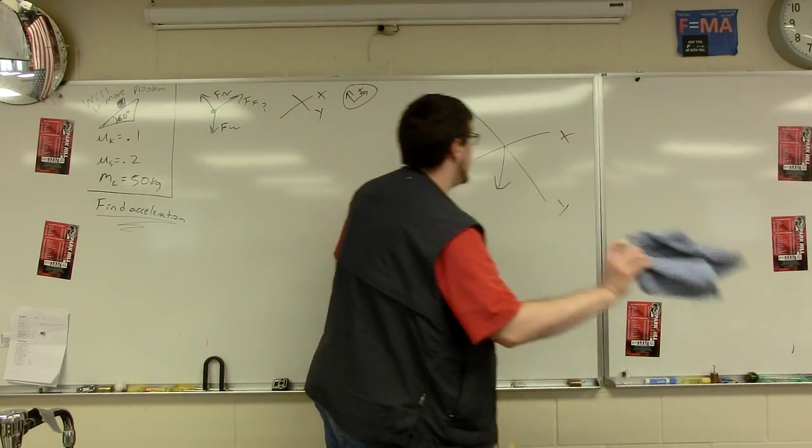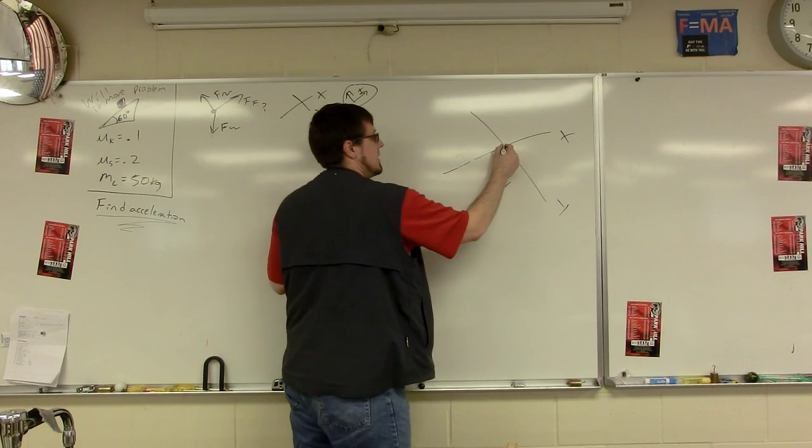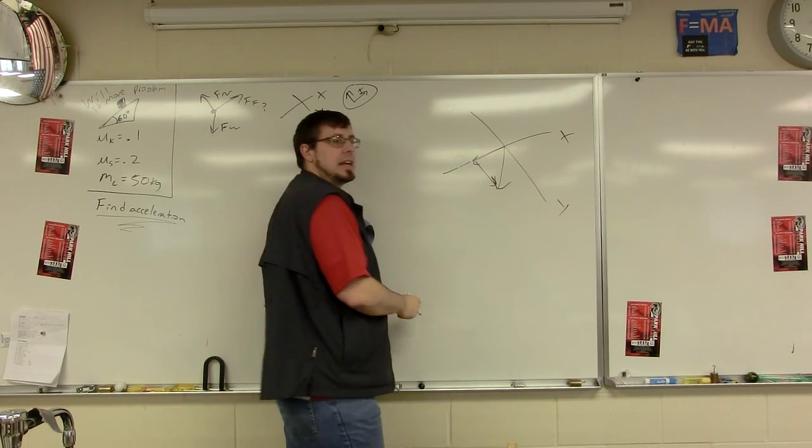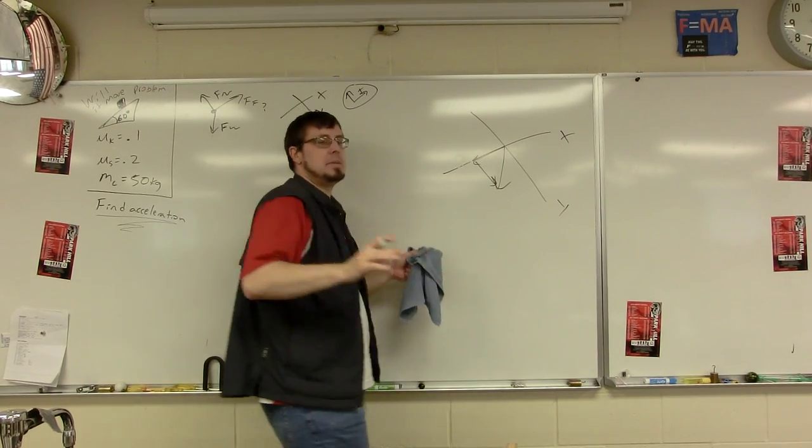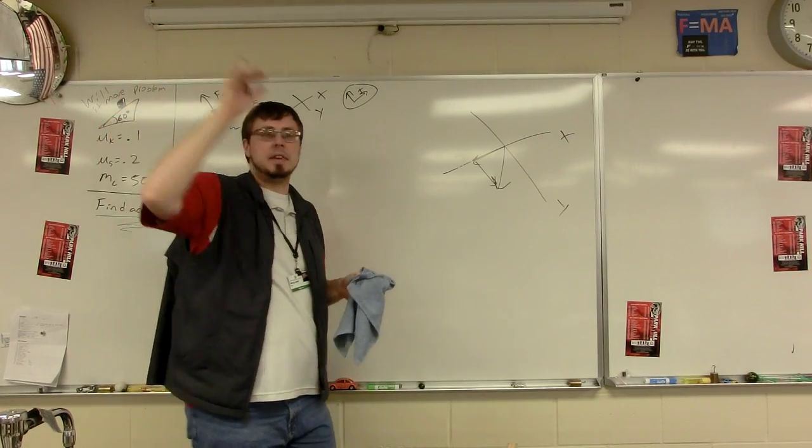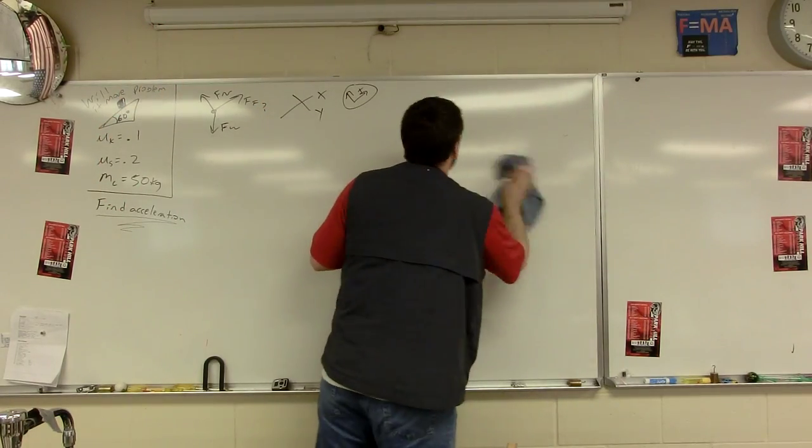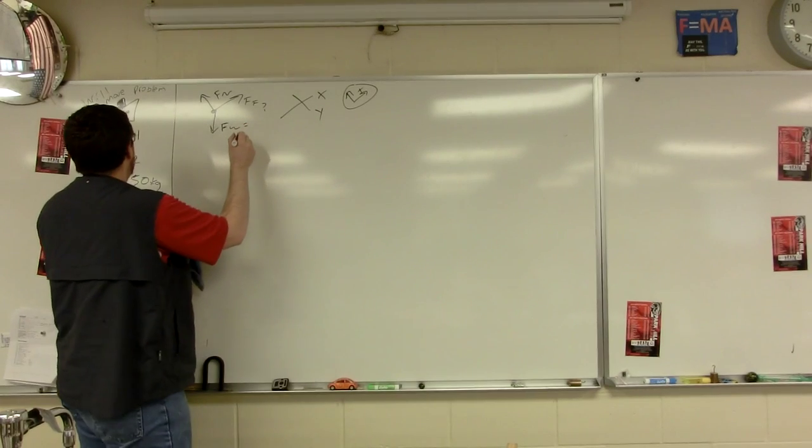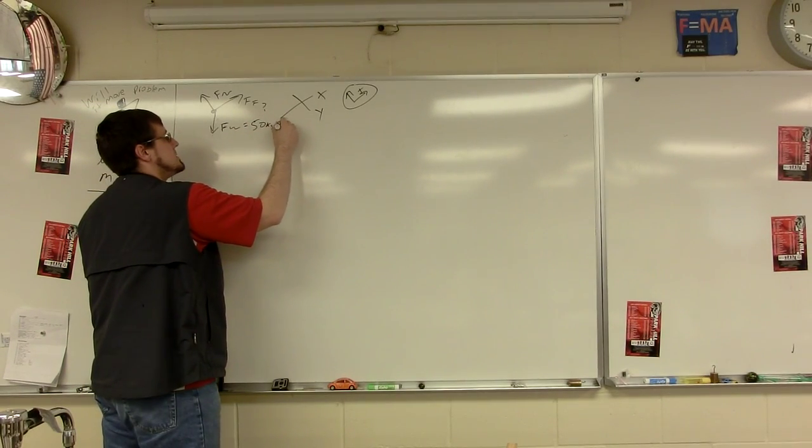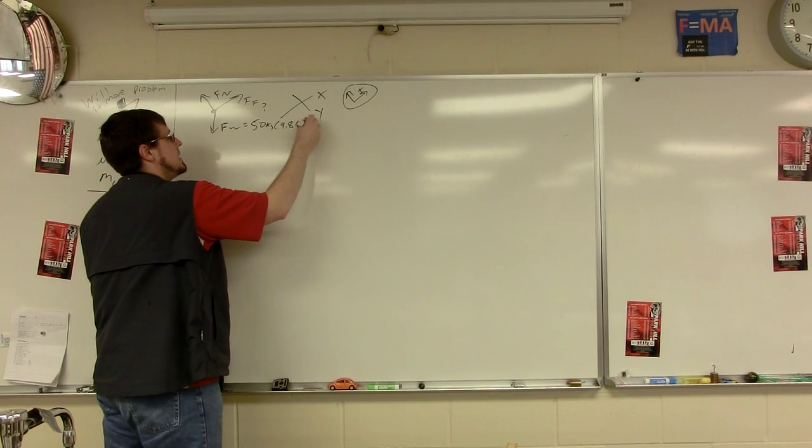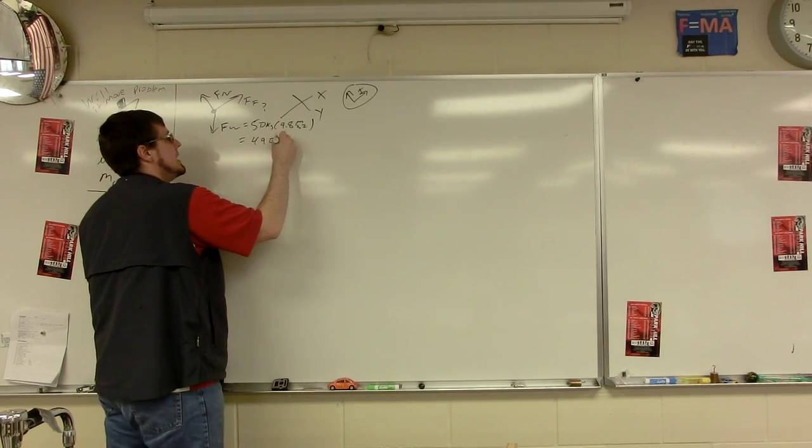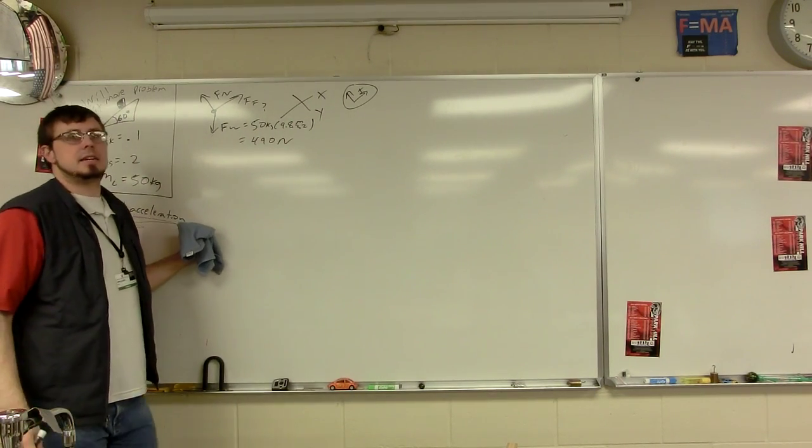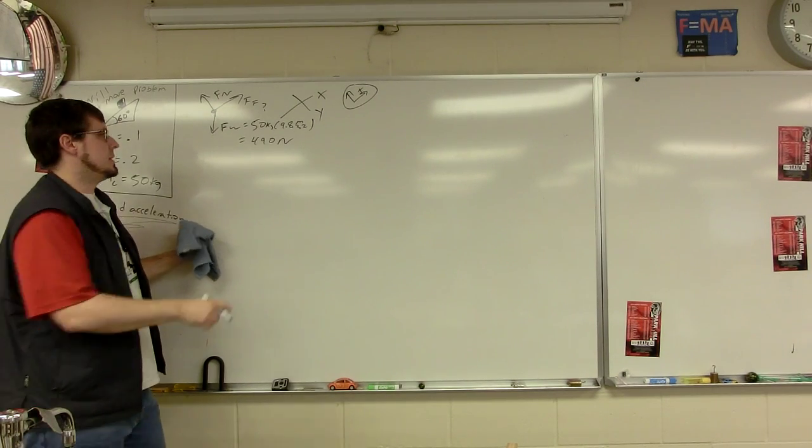Will those components be positive or negative? Negative and negative if you call up and right positive. How many people remember to add the negatives to their components? And let's figure out what the weight is. It was 50 kilogram crate times 9.8 meter per second squared. So 490 newtons. And technically it doesn't have a sign because it has an angle. If you put the sign on it, it's not the end of the world.